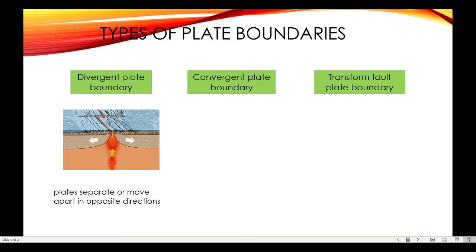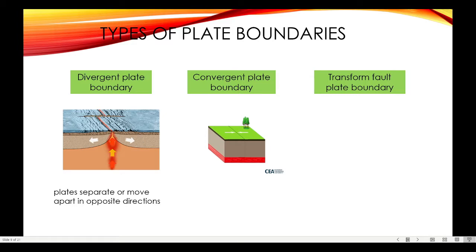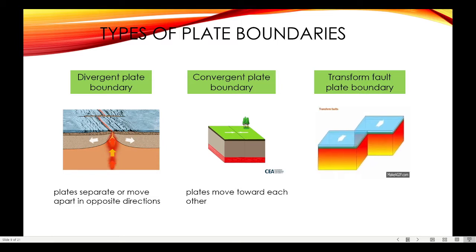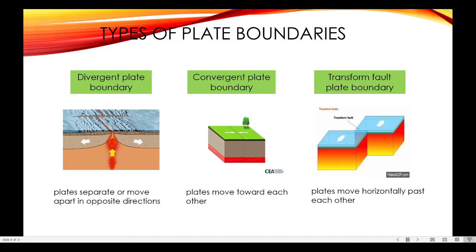In divergent plate boundary, plates separate or move apart in opposite directions, creating a zone of tension. In convergent plate boundary, plates move toward each other. While in transform fault boundary, plates move horizontally past each other.